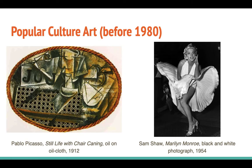Popular culture and art goes further than just paintings, though. It can show up in photography as well. For instance, this black and white photo of Marilyn Monroe done by Sam Shaw. Marilyn Monroe was a widely recognized actress at the time, most well-known for being a sex symbol. This photo was not only a form of visual art, but incorporated someone who was recognized by the general public.